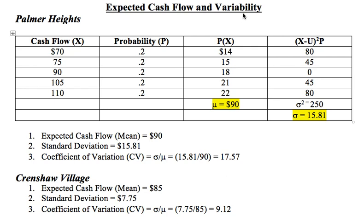In this column, how do we arrive at the expected mean? All we have to do is take the probability — in the first possible outcome the probability is 20% — and multiply it by the cash flow of 70, giving us 14. We go down for each possible cash flow, the random variable X, and multiply it by its probability. The values are 14, 15, 18, 21, and 22. Once we sum them up, we get the mean — the expected cash flow for Palmer Heights — which is 90.